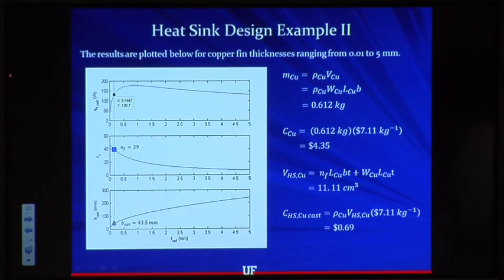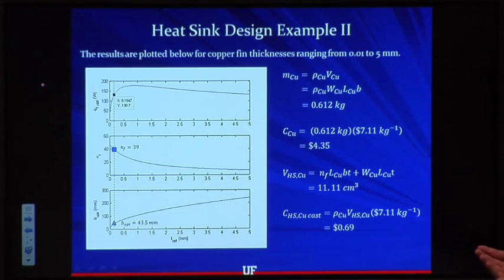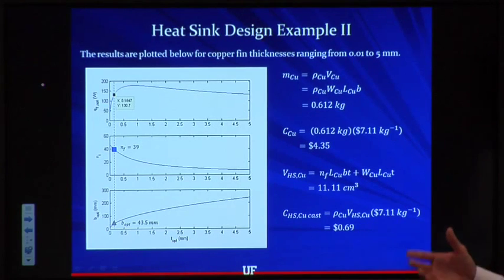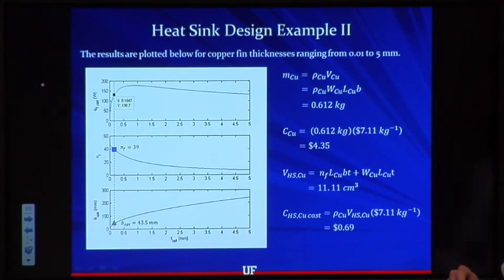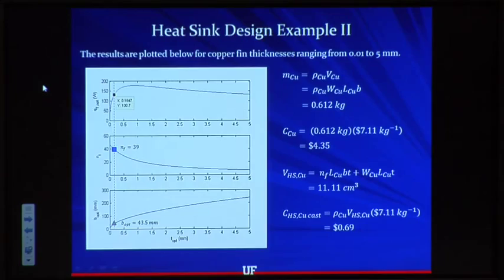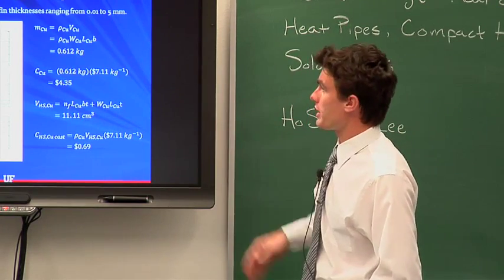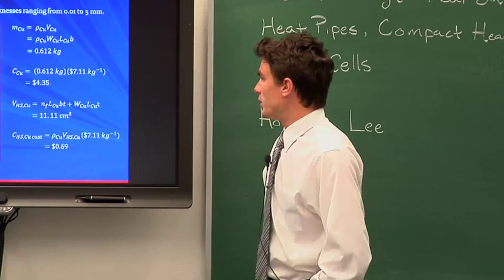What this shows is that if you're very constrained in the amount of space available for the heat exchanger, it may be worth the extra cost to use copper. However, if space is not a limiting factor, you should use a larger aluminum heat exchanger — that's why most heat exchangers in computers are aluminum. You should now have everything you need to design a standard heat exchanger for portable electronics. Hope this was helpful, thank you for watching.